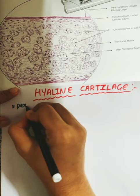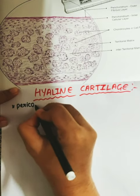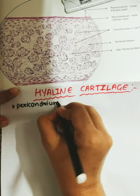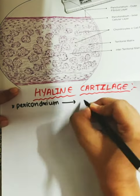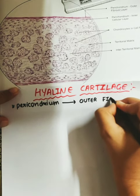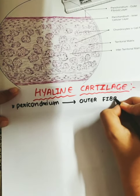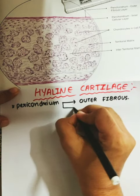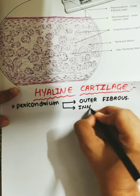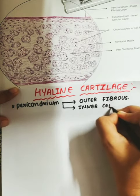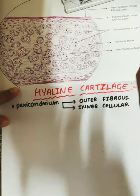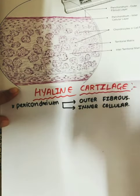In the perichondrium, there is an outer fibrous layer as well as the inner cellular layer.